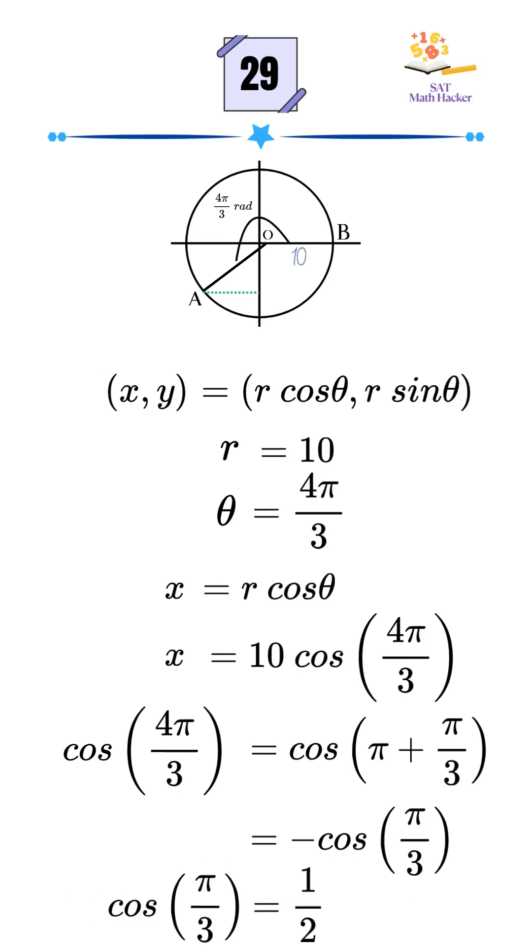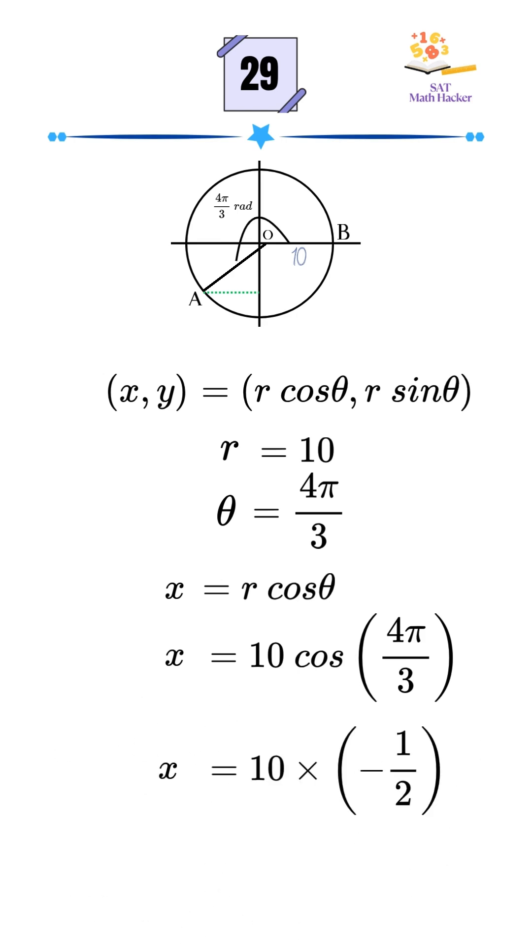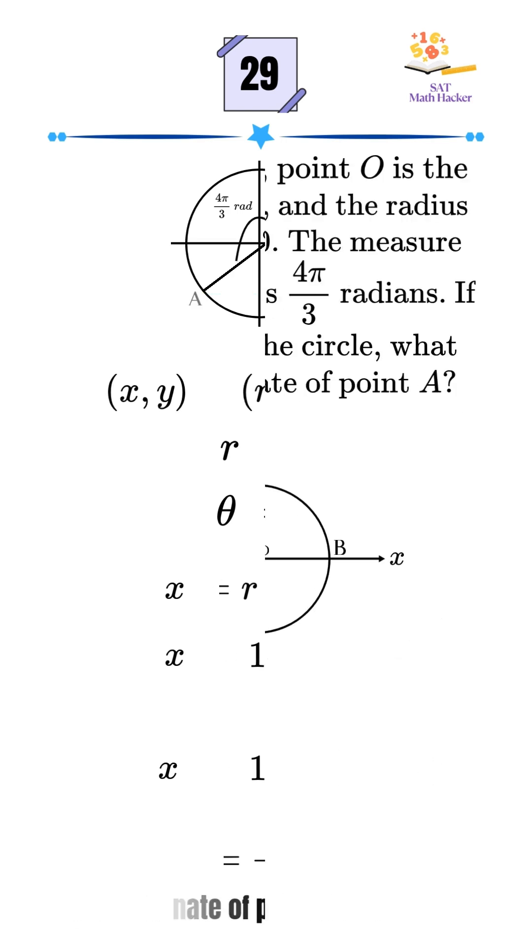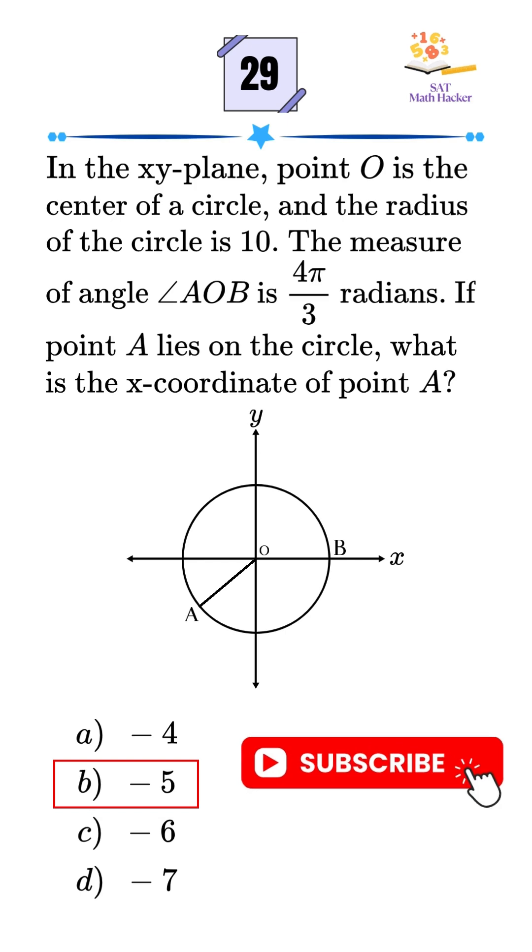Since cos(π/3) is one half, x equals 10 times negative one half equals negative 5. So the x-coordinate of point A is negative 5, which matches option B. Follow for more SAT practice problems and quick math tricks.